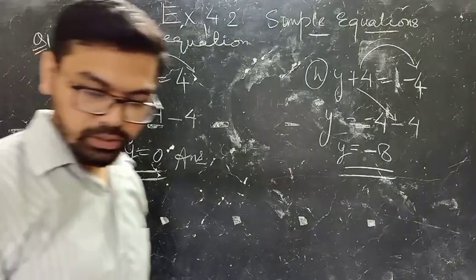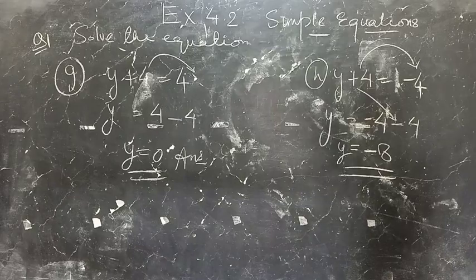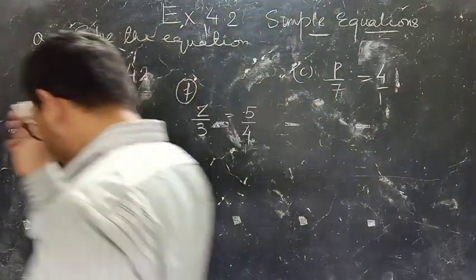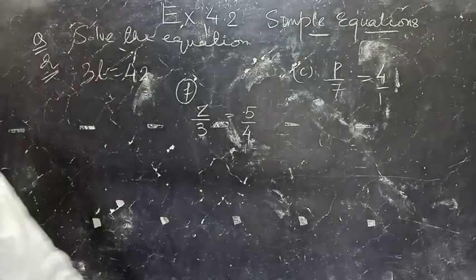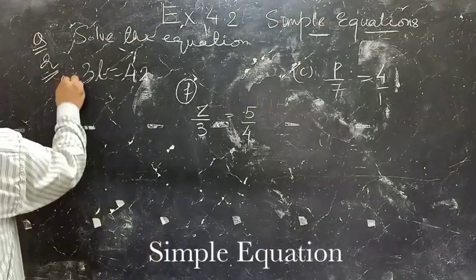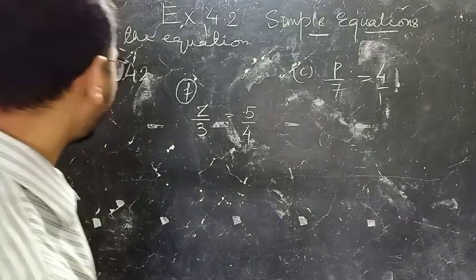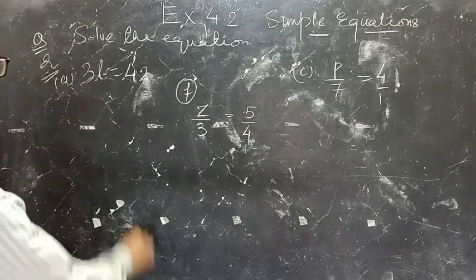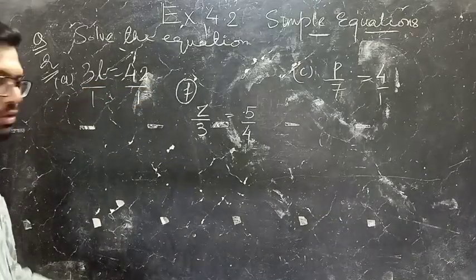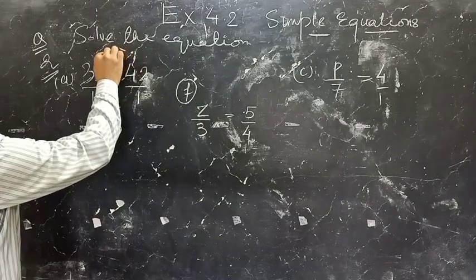Note it out first, then I will take the next question — question number 2. The question is part A: 3L equals 42. First we need to cross multiply the values. We need to calculate the value of L, so whatever is the coefficient of L, we cross multiply it. L equals 42 into 1 divided by 1 into 3. So the value of L is 14.